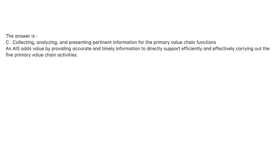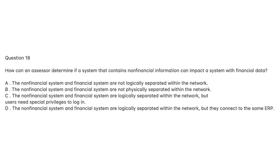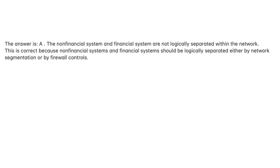Question 18. How can an assessor determine if a system that contains non-financial information can impact a system with financial data? A. The non-financial system and financial system are not logically separated within the network. B. The non-financial system and financial system are not physically separated within the network. C. The systems are logically separated within the network, but users need special privileges to log in. D. The systems are logically separated within the network, but they connect to the same ERP. The answer is A. Non-financial and financial systems should be logically separated either by network segmentation or by firewall controls.